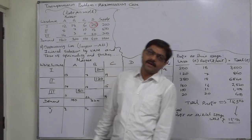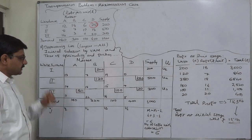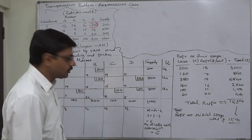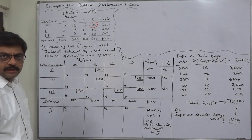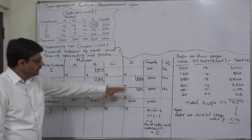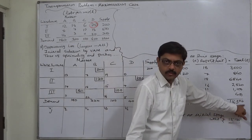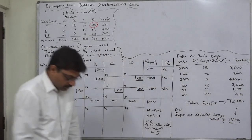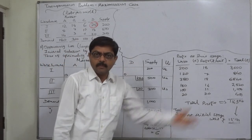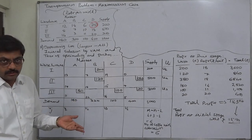Welcome back to the next part of this solution of the transportation problem maximization case. In the last lecture we arrived at a modified allocation because the initial solution was not optimal. We used the MODI method and made the reallocation. According to the modified solution, the total profit comes to 15300 rupees, which was 15180 rupees in the initial solution. The question now is whether this modified solution is the optimal one.